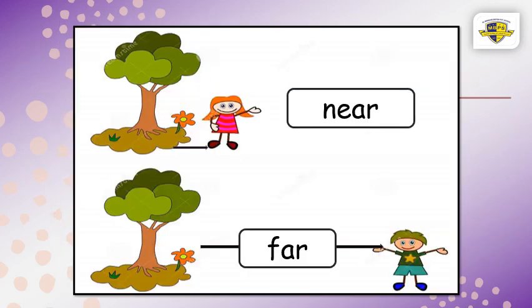Look, here we have a girl and a boy. Look at the girl — she's near to the tree. Look at the boy — he's far away from the tree.